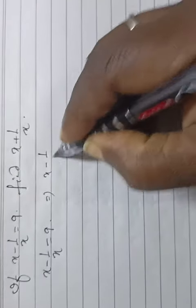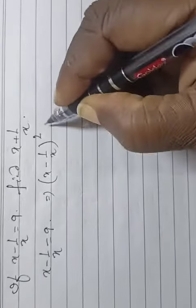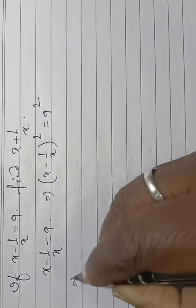Squaring both sides, now this is x minus 1 by x whole square is equal to 9 square.